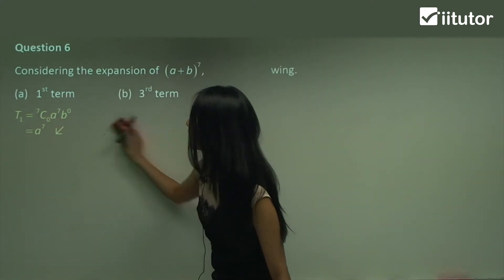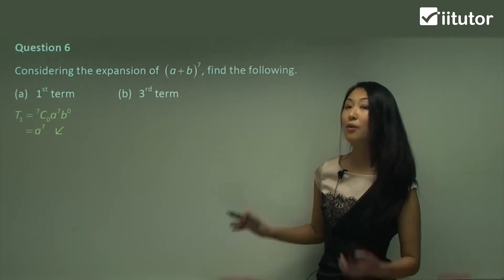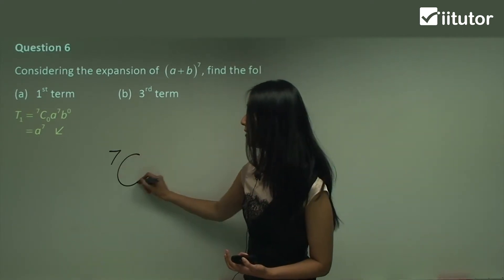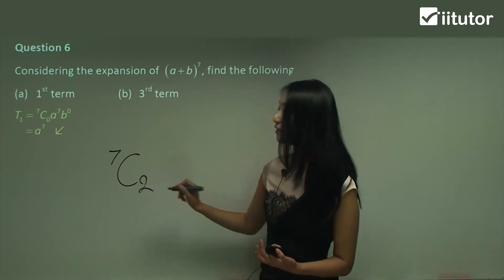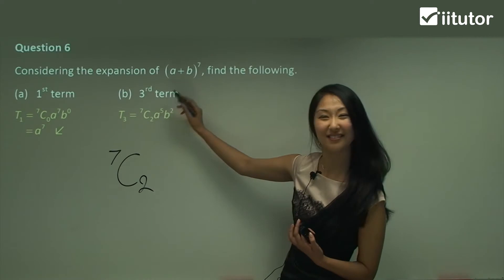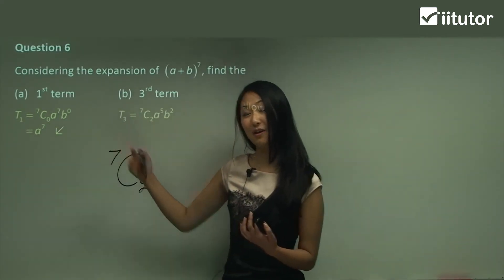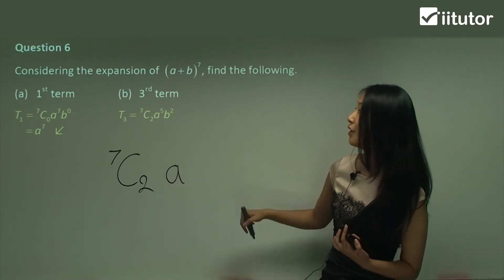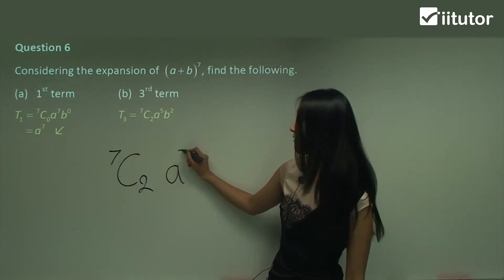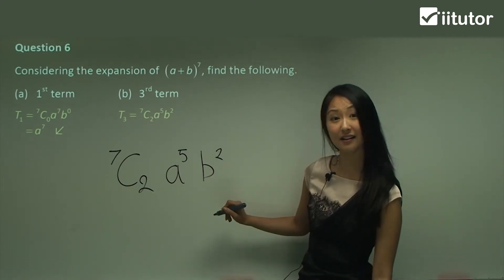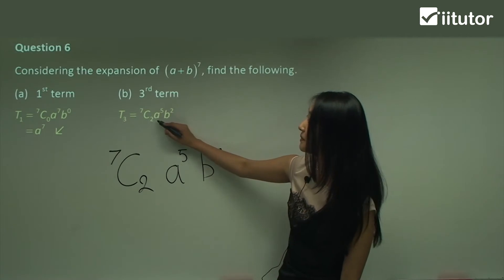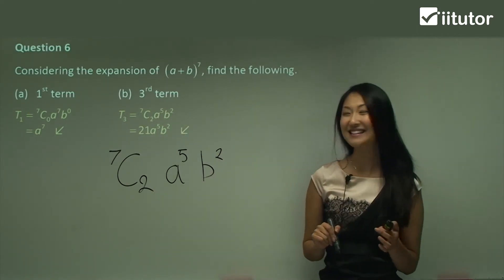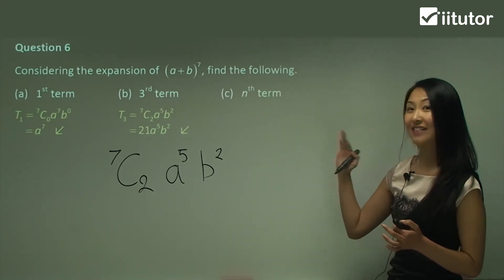For the third term, T3: the coefficient is 7C2, because the bottom number is always one less than the term — first term has zero, second has one, third has two. Then a is to the power of seven minus two, which is five, and b is to the power of two. Put 7C2 into your calculator and you get 21, so the third term is 21·a^5·b^2.